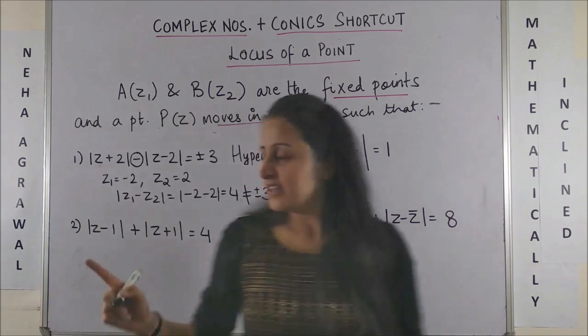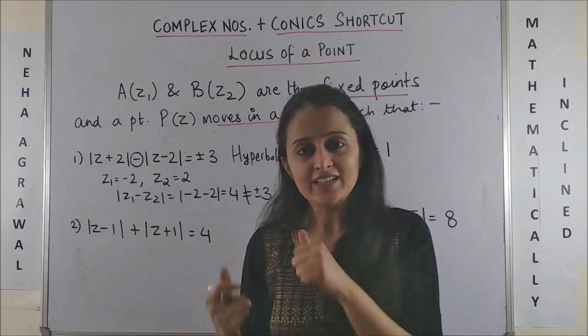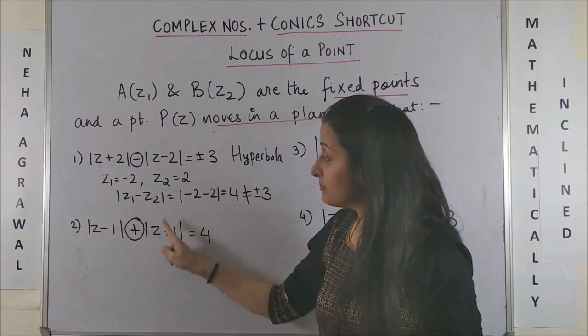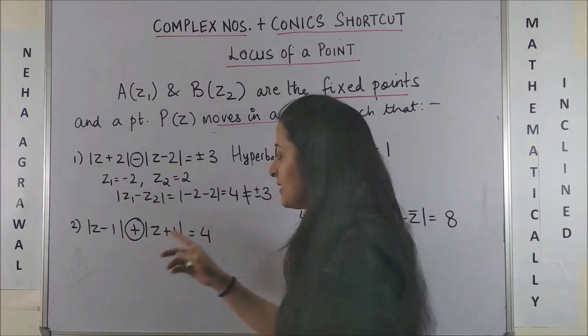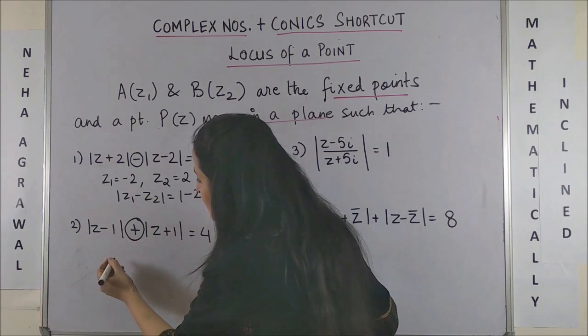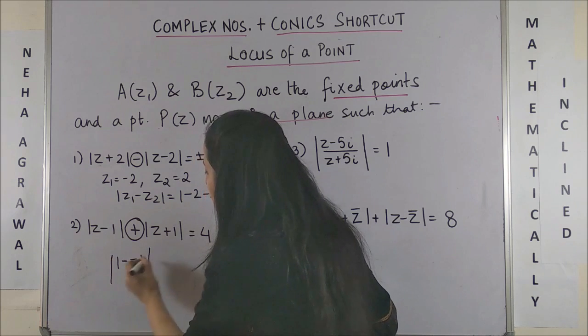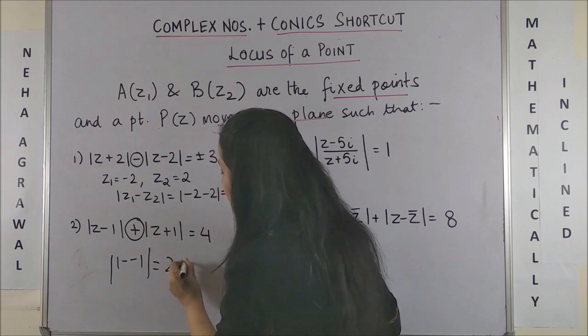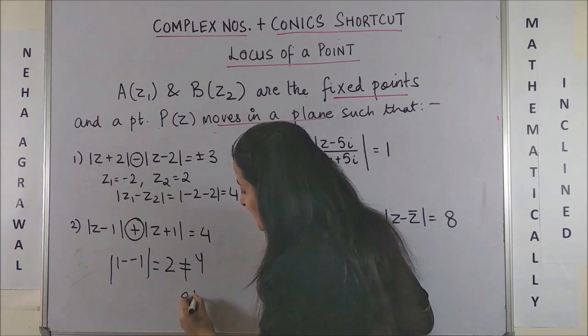Trust me, all these calculations you can do mentally and you can directly write it was a hyperbola. Same way with the plus sign in between, we anticipate it to be an ellipse. Again, your z₁-z₂ would be 1-(-1), the mod turns out to be 2, which is nowhere equal to 4. Thus, the answer was a simple ellipse.